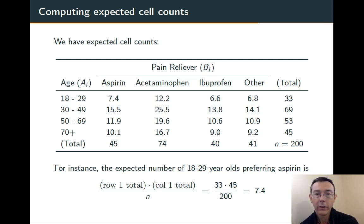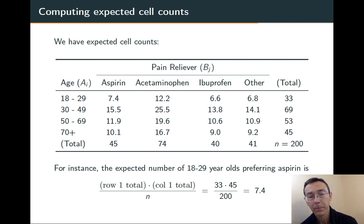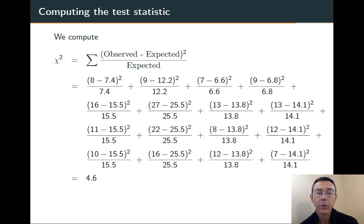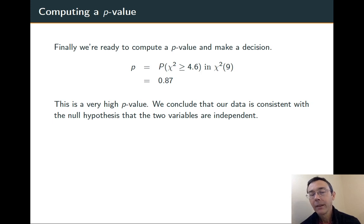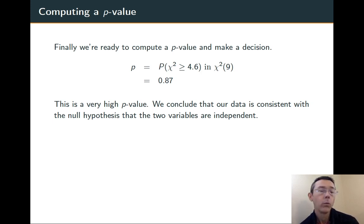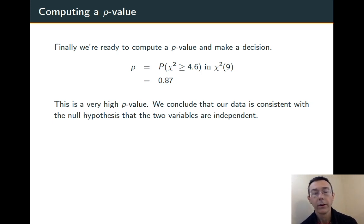Actually computing the cell counts is kind of a pain. You take the row total times the column total, divide by the sample size, and do that H times K times — in this case, 16 times. Once we have that, we can compute the chi-squared statistic. For every cell in the table, we do observed minus expected squared over expected, add them all up, and in this case we get about 4.6. We're doing a chi-squared test with nine degrees of freedom — that's four minus one times four minus one, so three squared. We get a p-value of 0.87. That is not a small p-value, and so we conclude that our data is consistent with the null hypothesis that the two variables are independent.